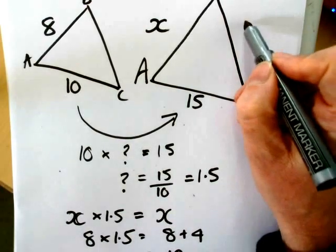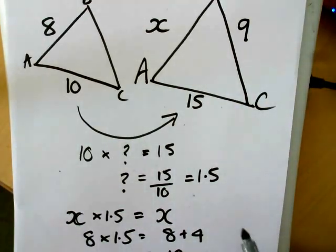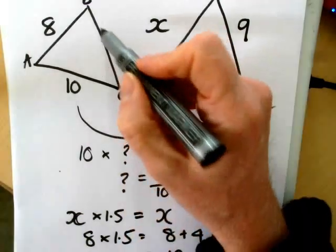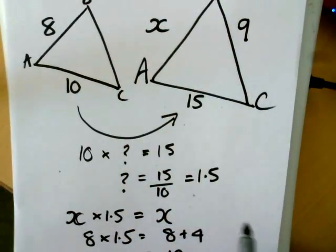Now in a similar way, suppose I was told that this side was 9. How would I find the corresponding side, little BC?